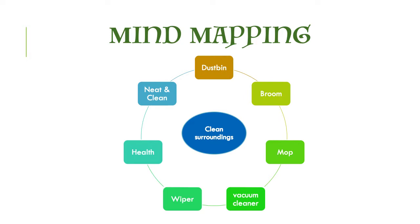Let's start the chapter with mind mapping. Children, what comes into your mind when you hear the topic clean surroundings? Dustbin, broom, mop, vacuum cleaner, wiper, health, neat and clean.